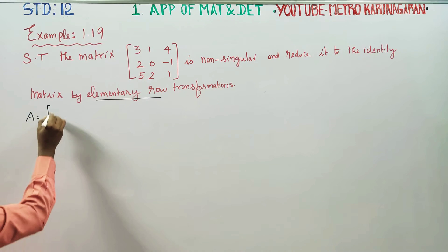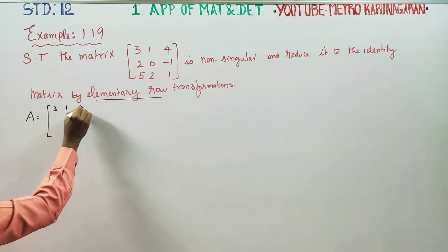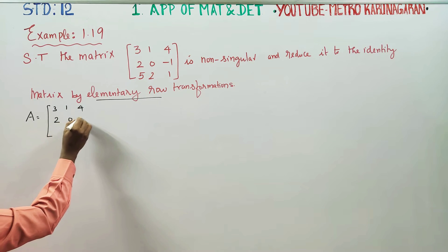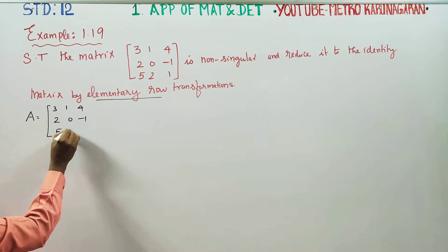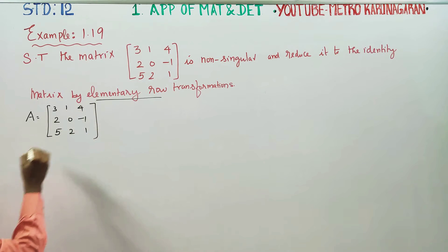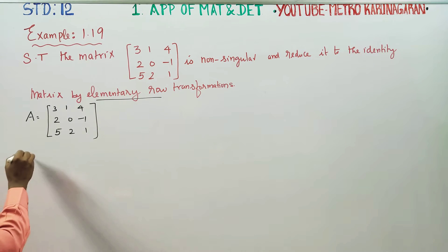A is equal to the matrix: row 1 is 3, 1, 4; row 2 is 2, 0, minus 1; row 3 is 5, 2, 1. First, we need to check whether it is singular or non-singular.